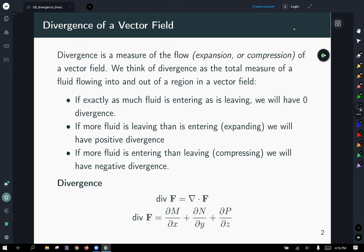Remember that the divergence of a vector field measures the flow or expansion or compression of a vector field. So you can think of this as a total measure of the fluid flowing in or out of a region in a vector field or a gas expanding or compressing. If exactly as much fluid is entering as it's leaving, your divergence will be zero. If more fluid is leaving than is entering, you have an expanding field, we'll have positive divergence. If more fluid is entering than leaving, we call that compressing and we have a negative divergence.